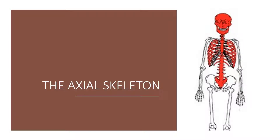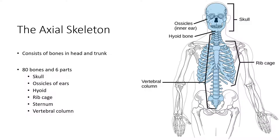This video is a quick overview of the axial skeleton. The axial skeleton consists of bones in both your head and your trunk. There are about 80 bones in total and six parts, so it includes your skull, the ossicles of your ears, your hyoid which is your throat bone, the rib cage, the sternum, and the vertebral column.